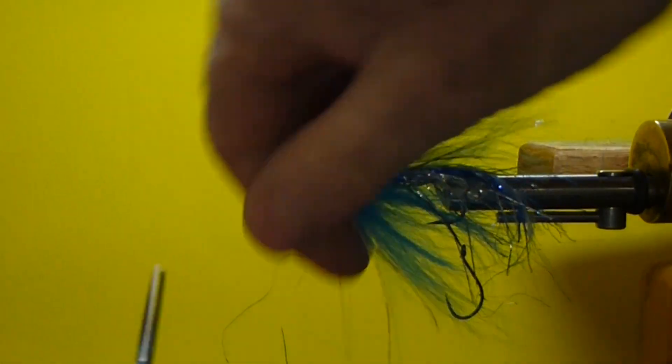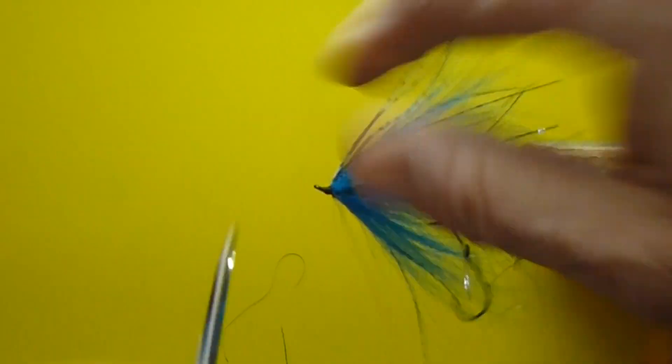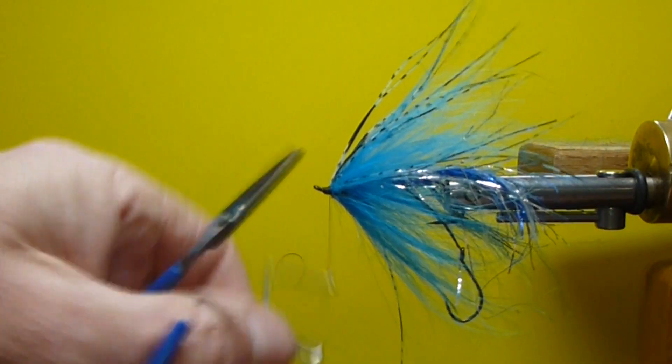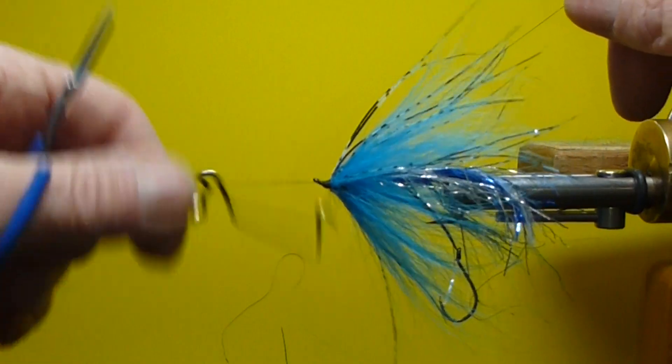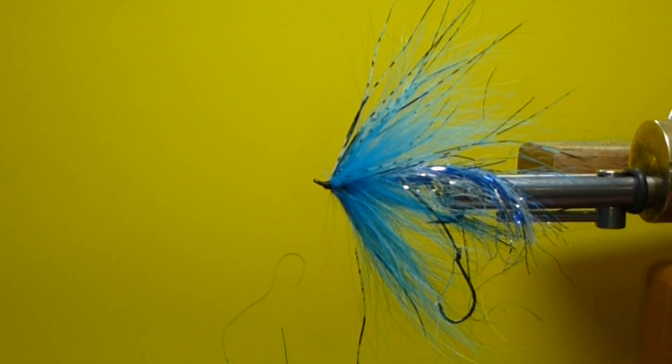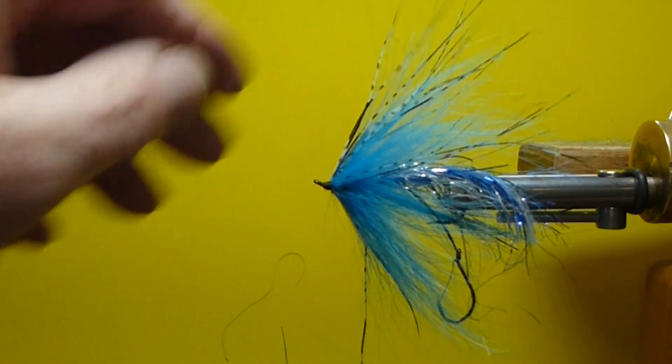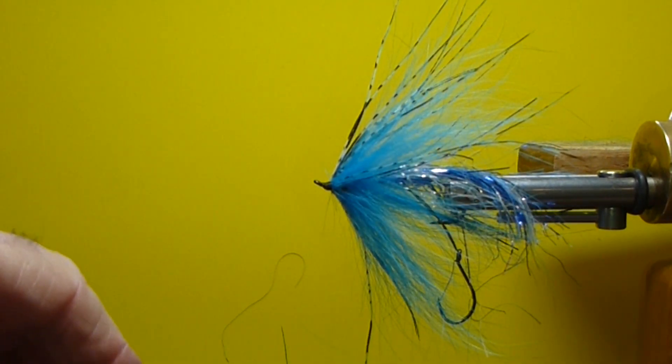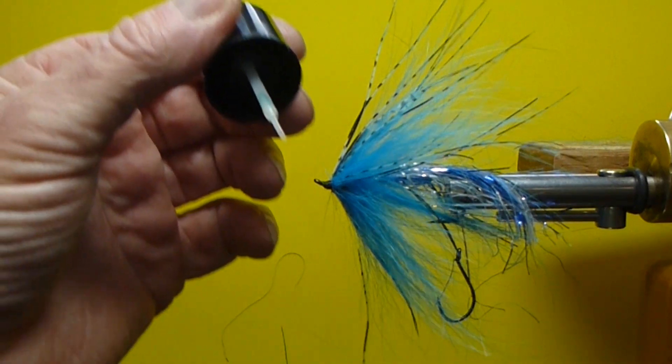I'm just going to finish my head here. I'll make a small neat head. Put it. Then I'll get some resin here, some UV resin. You could take a lot longer, do it super neat if you want to hang it on the wall.